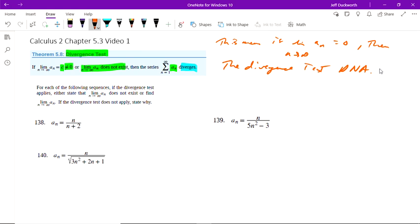For each of the following sequences, if the divergence test applies, either state that the limit as n approaches infinity of a_n does not exist, or find the limit. If the divergence test does not apply, state why. Those are the two things that are going to tell us divergence. If we don't find either of those, we'll just put a DNA there.